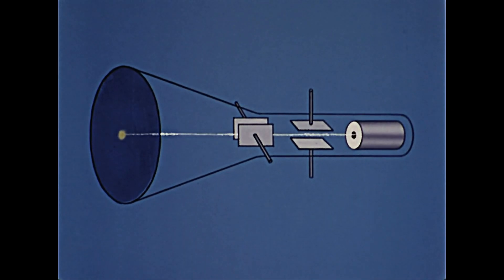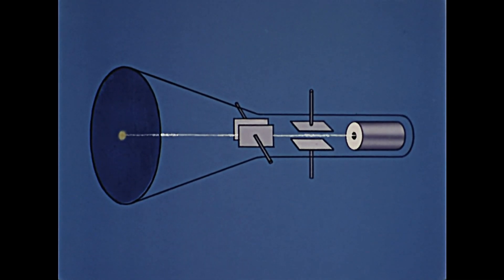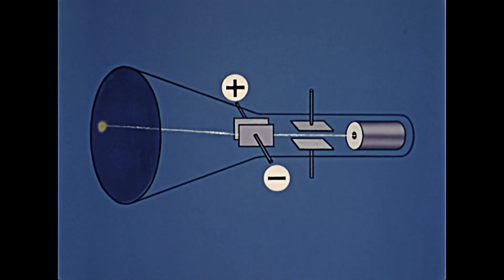The second set of plates in a cathode ray tube controls the horizontal deflection. By changing the voltage on these plates, the beam is deflected horizontally.